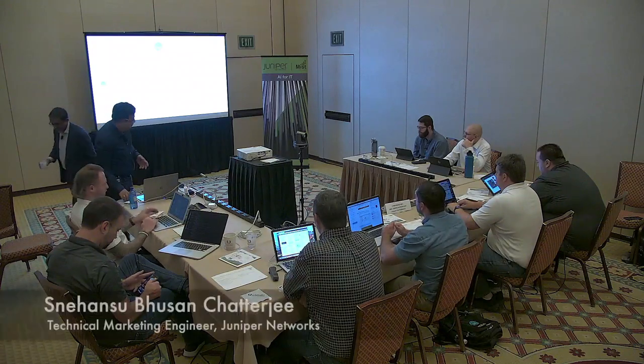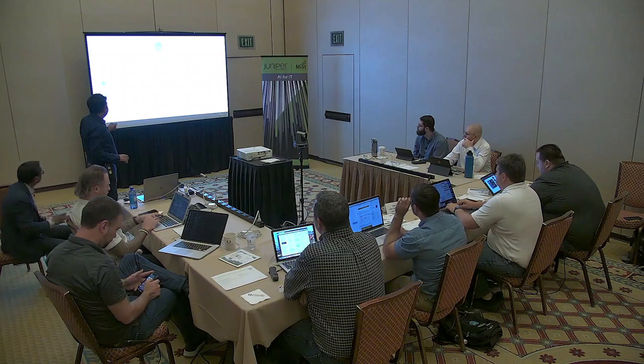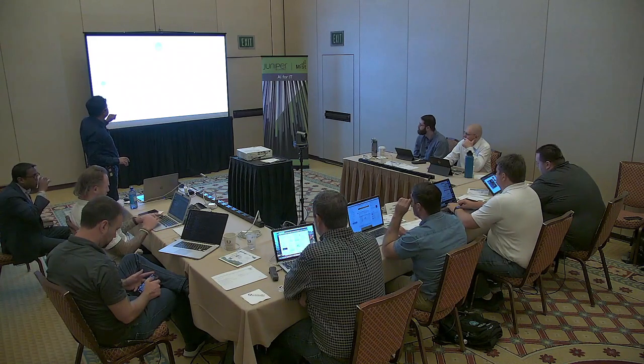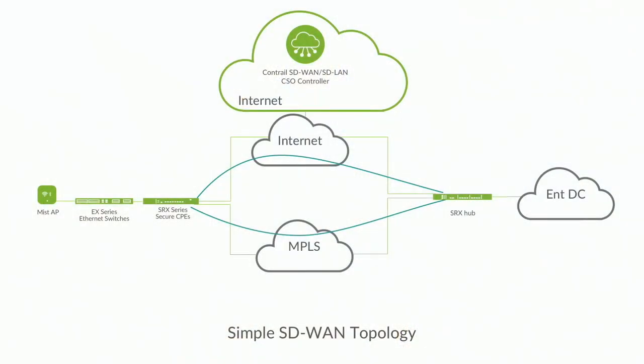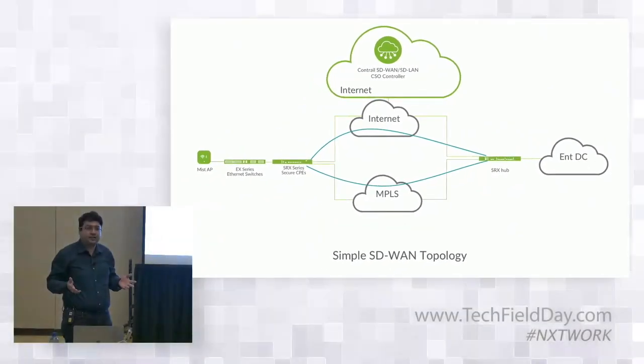I'll quickly go through a couple of slides just to show the demo topology. I have a SRX device connected to an SRX hub, and the blue lines represent the overlay tunnels from the spoke to the hub. This is a very simplistic demo topology, and Control SD-WAN, or CSO — Control Service Orchestration — is actually hosted on the cloud.